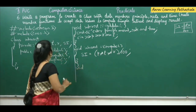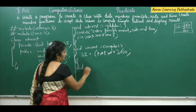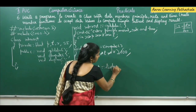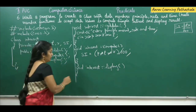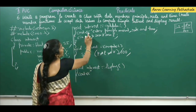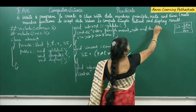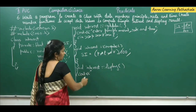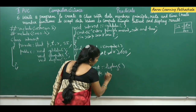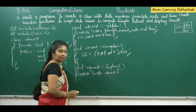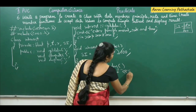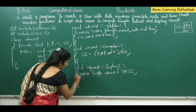The next function is display, to show the result: void interest scope resolution operator display. Inside the display function, use cout with the insertion operator to write 'simple interest equals', then display the value of SI using the insertion operator and variable SI. Then close this function.